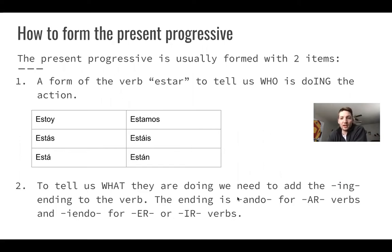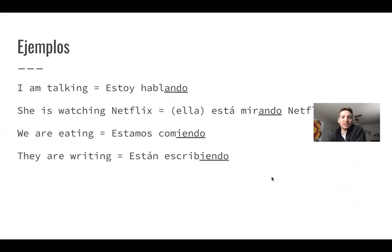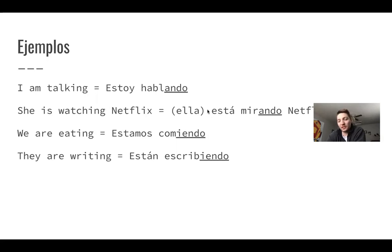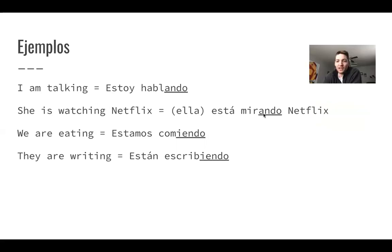Let's take a look at a couple of examples — miremos algunos ejemplos aquí. First one: 'I am talking' — Yo estoy hablando. That comes from the verb hablar, an A-R verb: I drop the A-R and I add -ando. That's my I-N-G: estoy hablando, talking. Next: 'She is watching Netflix' — Ella está mirando Netflix. El sujeto es opcional, claro. Está mirando Netflix — another A-R verb, we took off the A-R and added -ando.